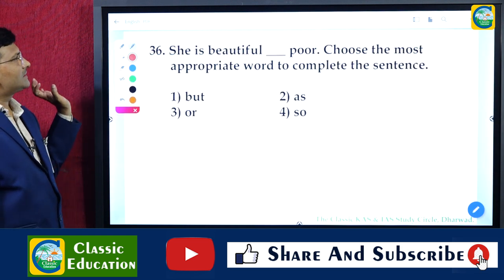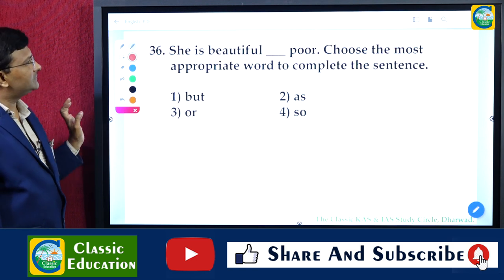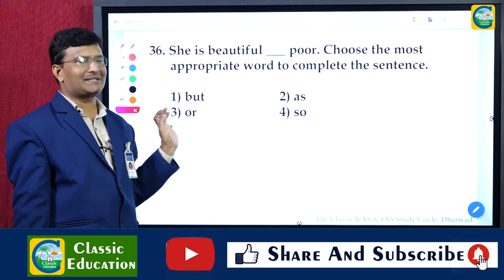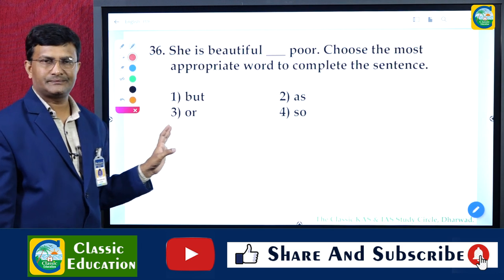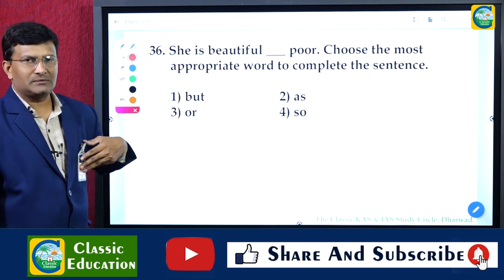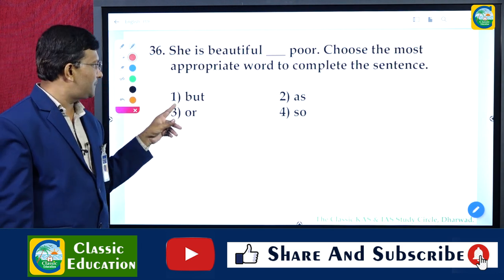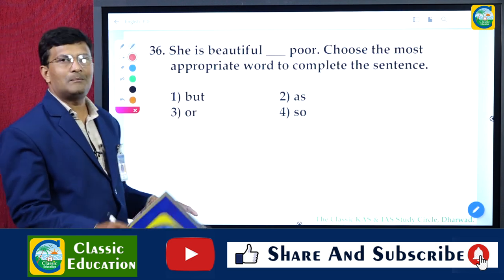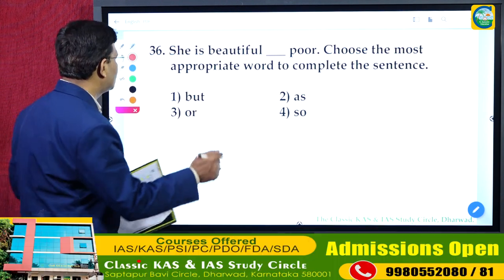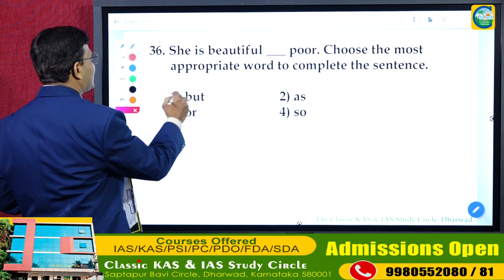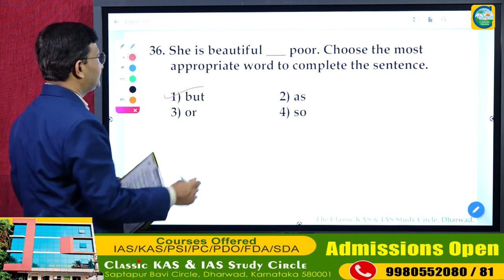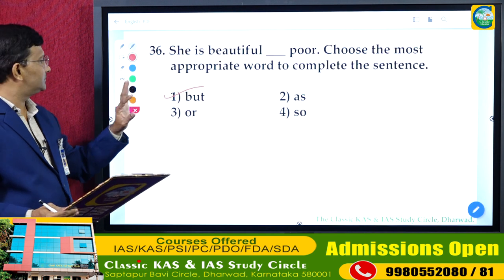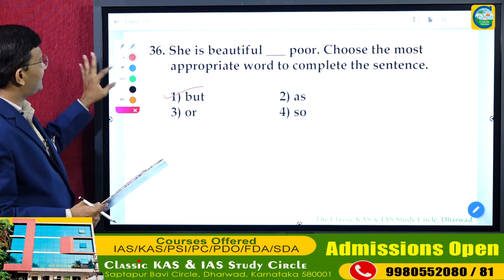Question 36: 'She is beautiful ___ poor.' Choose the most appropriate word to complete the sentence. The answer is 'but' — 'She is beautiful but poor.' The answer for question 36 is 'but.'